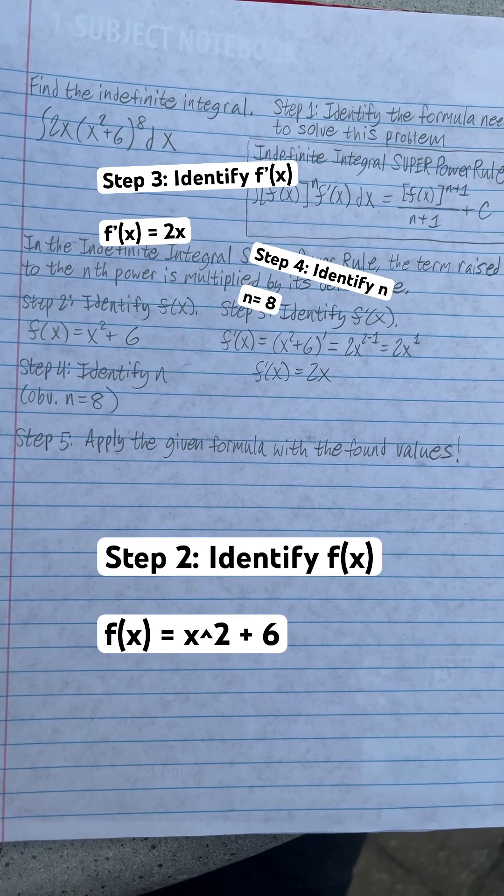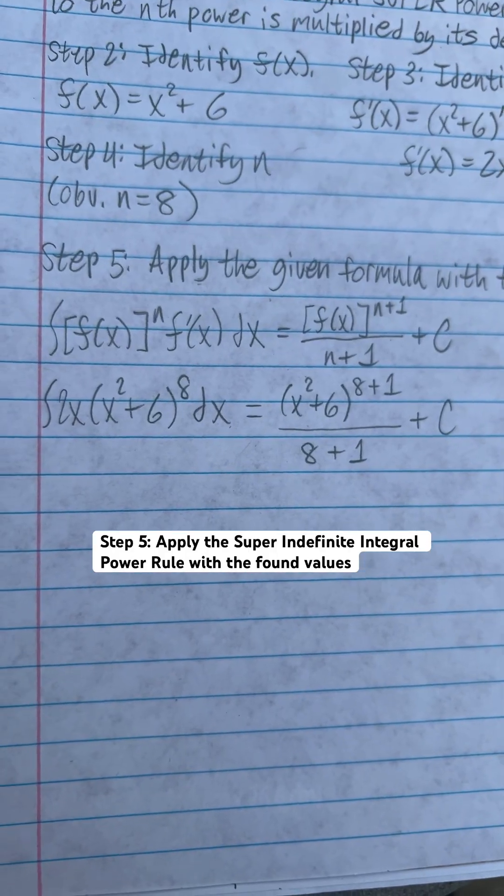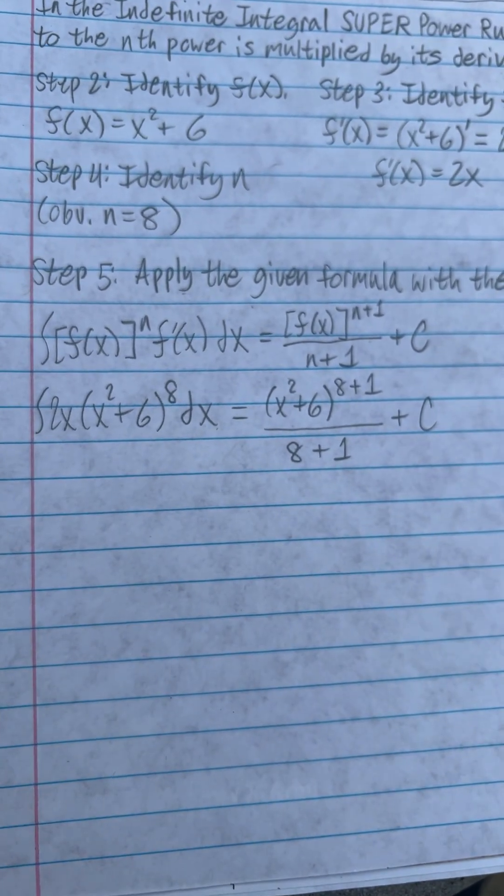Now step 5 is to apply the given formula with the found values. It should be obvious why I named it that. It's literally just the indefinite integral power rule except with a little something extra.